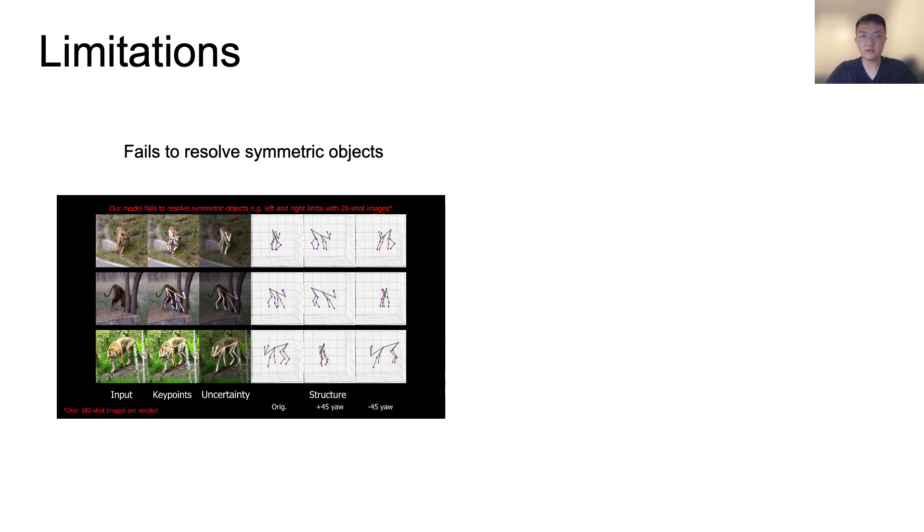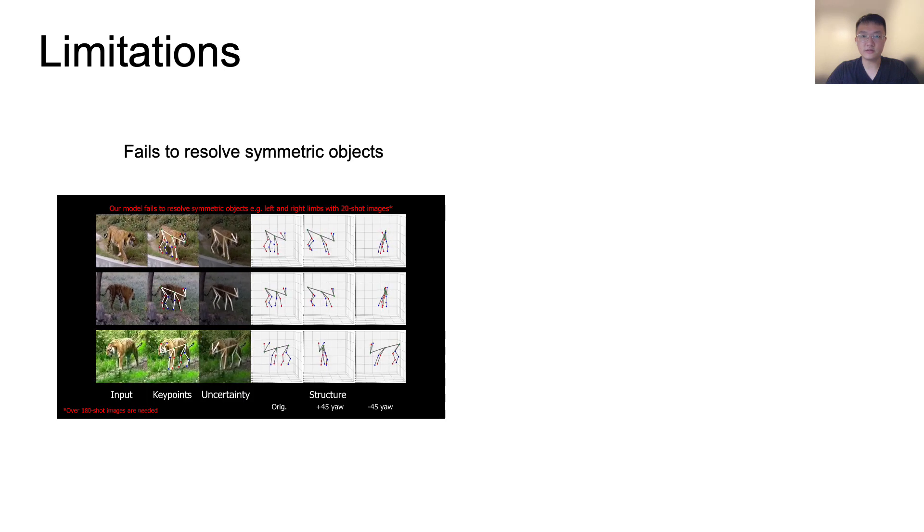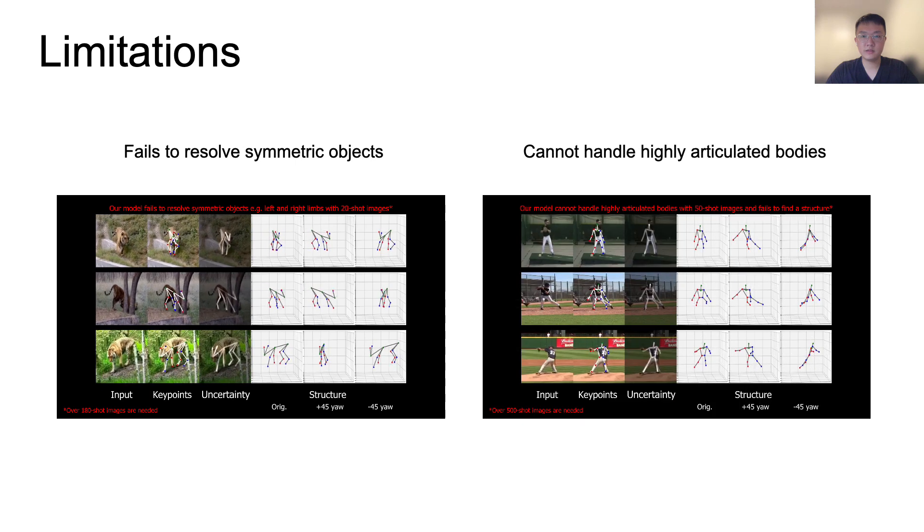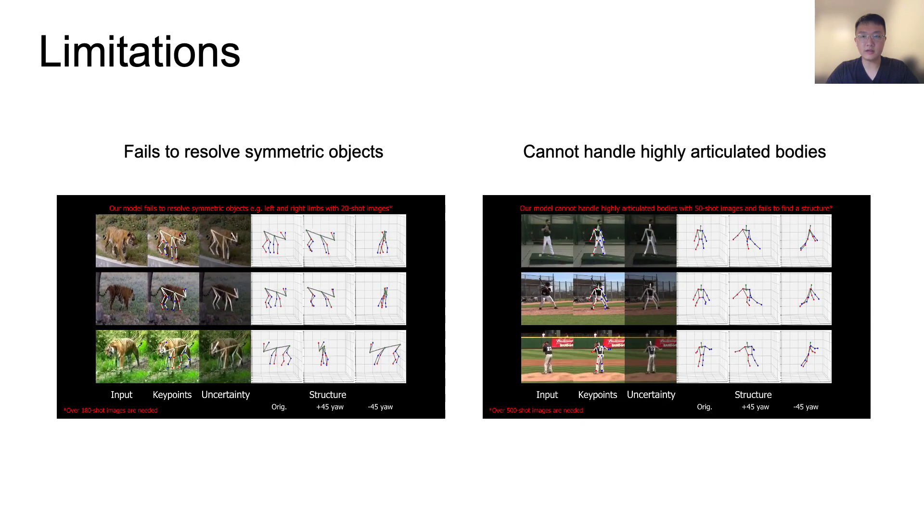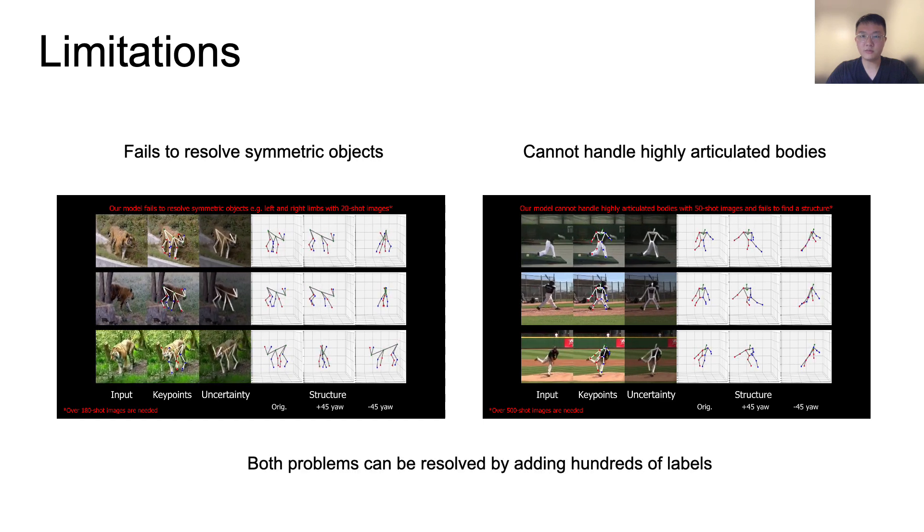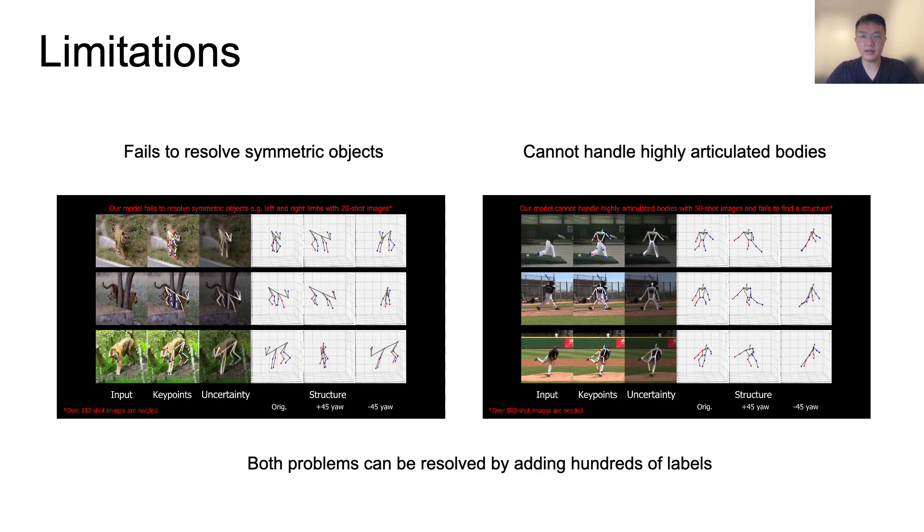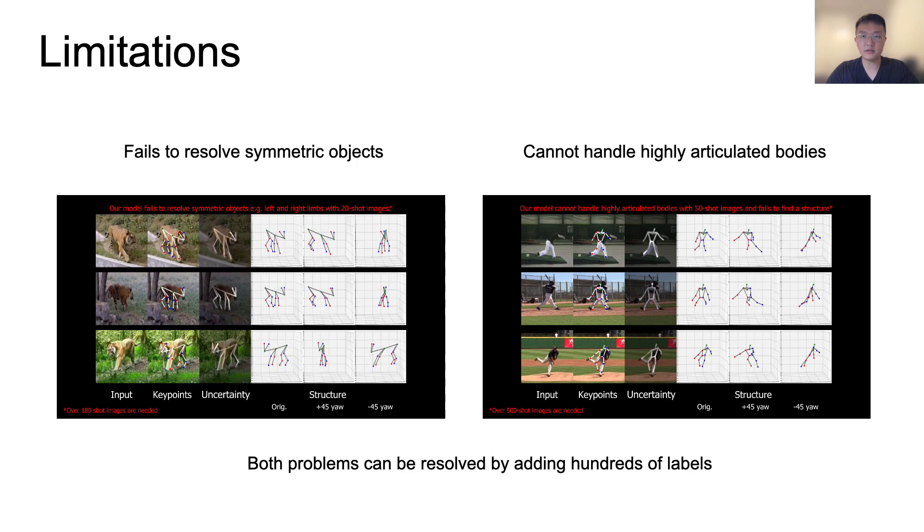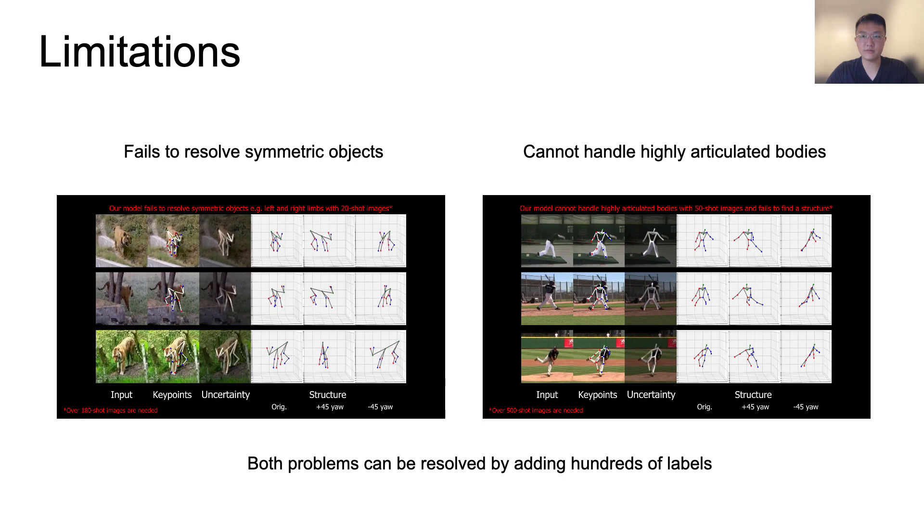Our model has two limitations. First, it fails to resolve symmetric objects. Second, it cannot handle highly articulated bodies. However, both problems can be solved by adding hundreds of labels, which is still one or two orders of magnitude fewer than existing semi-supervised methods.